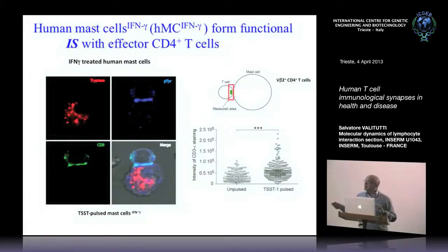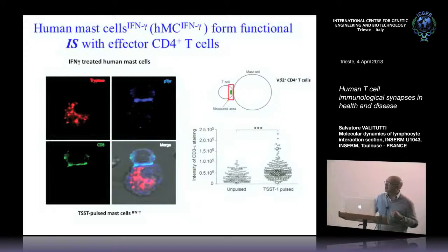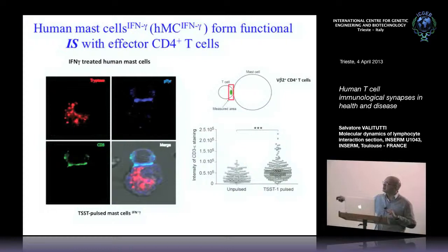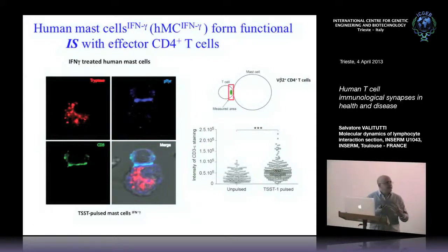The helper T-cells were polyclonal lines stimulated via the bacterial superantigen TSST-1, so these were V-beta-2 human T-lymphocytes stimulated by mast cells loaded with TSST-1. We showed that these mast cells could form immunological synapses with helper T-lymphocytes, characterized by enrichment of CD3 and phosphotyrosine, indicating that also in the case of human mast cells, helper T-lymphocytes can be activated in a specific manner.